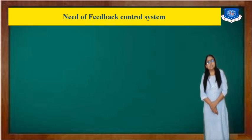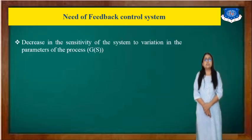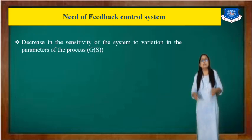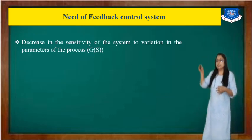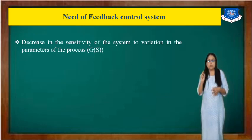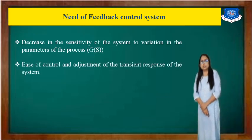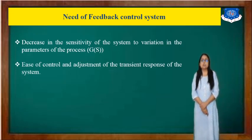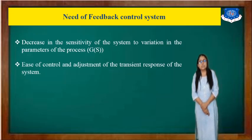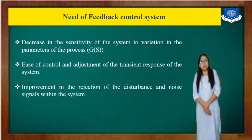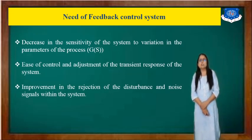Now we will discuss the need for a feedback control system. It decreases the sensitivity of the system to variations in the parameter of the process, G(s), because in feedback we have H(s) which goes back to the input as a summing input. If any disturbance is present in the system, you can eliminate it with the help of feedback. It also provides easy control and adjustment of the transient response — rise time, delay time, and so on — and implements rejection of disturbances and noise signals.